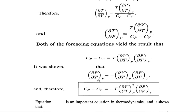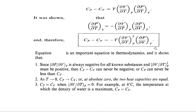We can write partial P by partial T at constant volume V as minus of partial V by partial T at constant P, into partial P by partial V at constant T. By substituting this in the above expression, we get Cp minus Cv is equal to minus T into partial V by partial T, whole squared at constant pressure, into partial P by partial V at constant temperature. This is the heat capacity equation. Since partial P by partial V at constant temperature is always negative for all known substances, partial V by partial T whole squared at constant pressure must be positive. Therefore, Cp minus Cv can never be negative, or Cp can never be less than Cv.